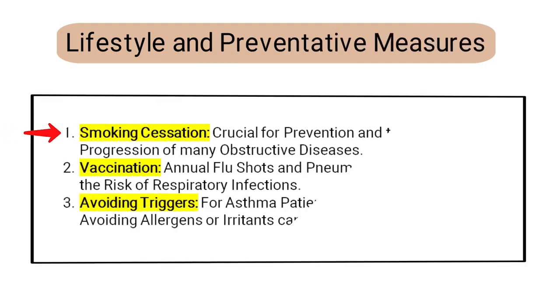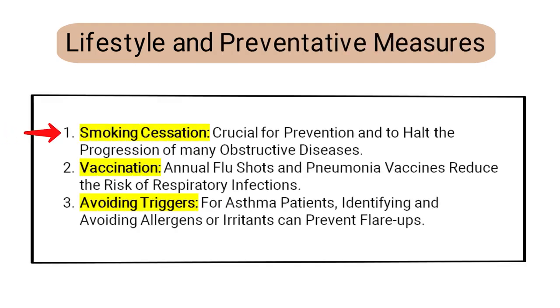Finally, we have lifestyle and preventative measures, which includes smoking cessation — crucial for prevention and to halt the progression of many obstructive diseases — vaccination, which involves annual flu shots and pneumonia vaccines to reduce the risk of respiratory infections, and for asthma patients, identifying and avoiding allergens or irritants to prevent flare-ups.